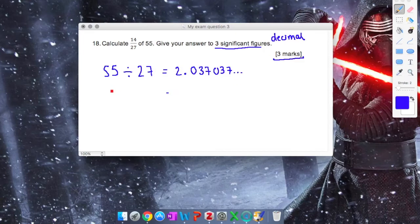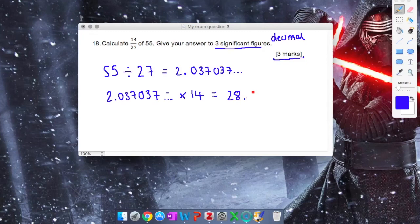The next step is to take that decimal that I just found. I'm going to take my 2.037037 dot dot dot and multiply it by the numerator, the top number of my fraction. That decimal that I've left on my calculator screen, I can just type multiply by 14 equals, and that will give me my answer as a long decimal. It is 28.518, 518, etc.